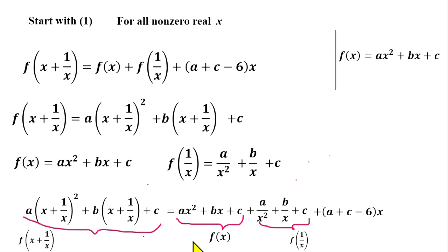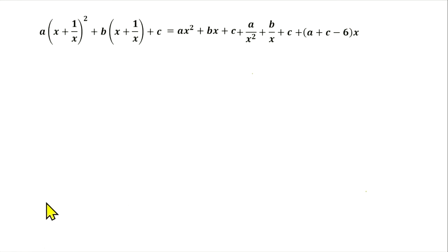Next, we analyze this equation. First, we will find the square of x plus 1 over x. This is simple: x squared plus 2 plus 1 over x squared.